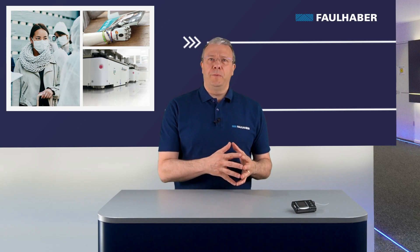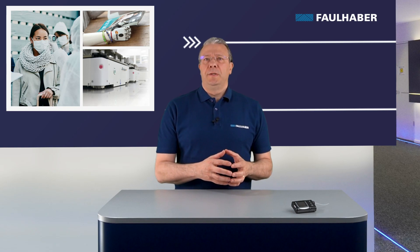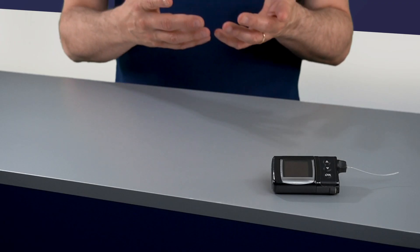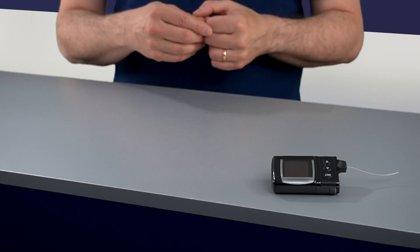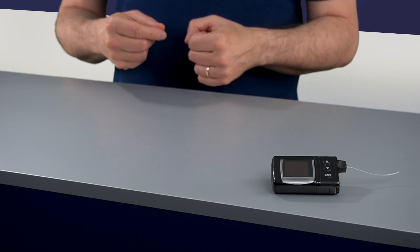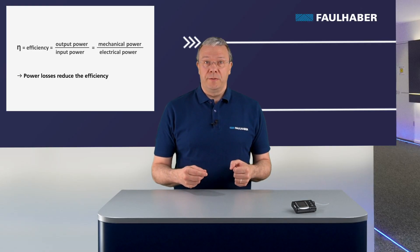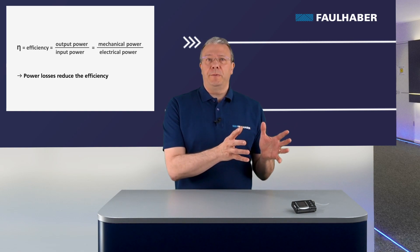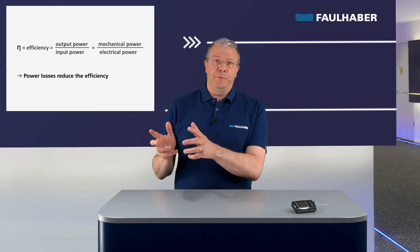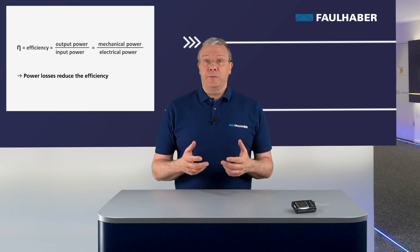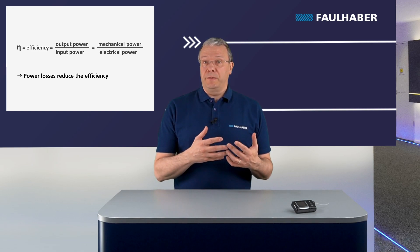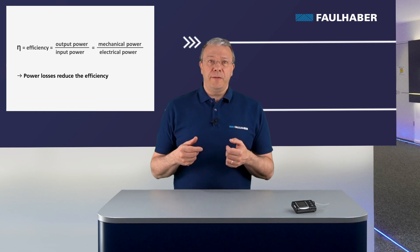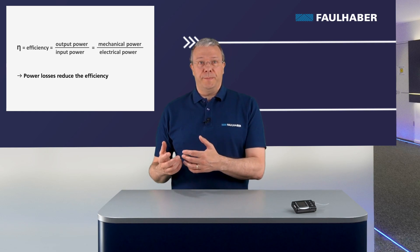Applications are nowadays more and more efficient. Battery-operated devices like insulin pumps, for example, need a high efficiency drive system to possibly maintain the longest battery charge. The efficiency is defined as the ratio between the output power and the input power. In small electric motors, this is the ratio between the mechanical power generated at the output shaft and the electrical power delivered to the motor.